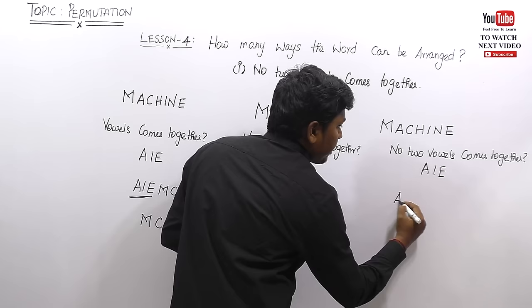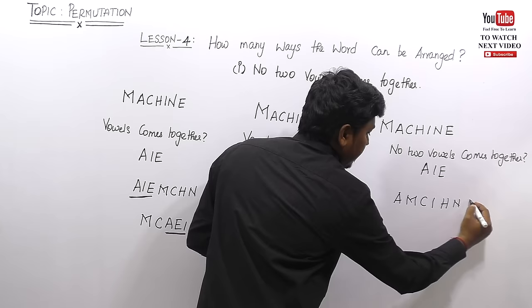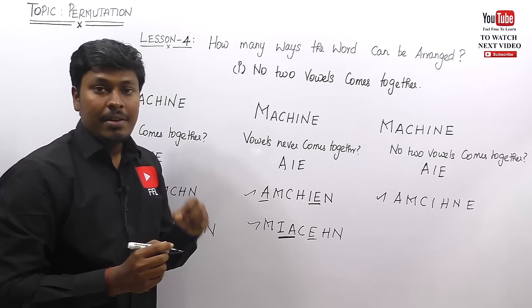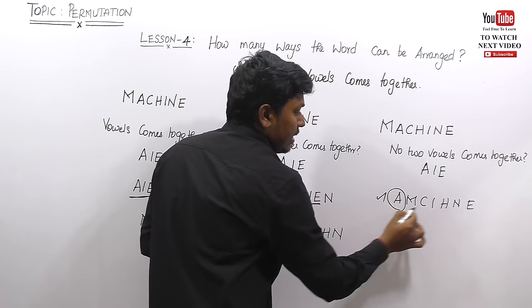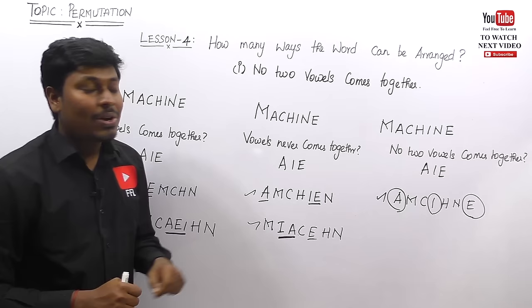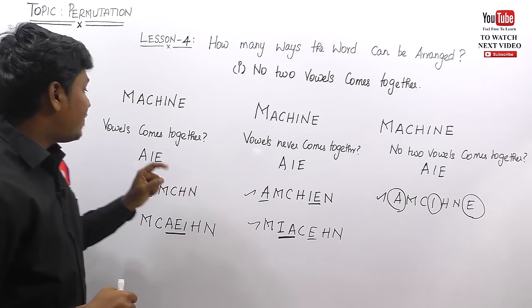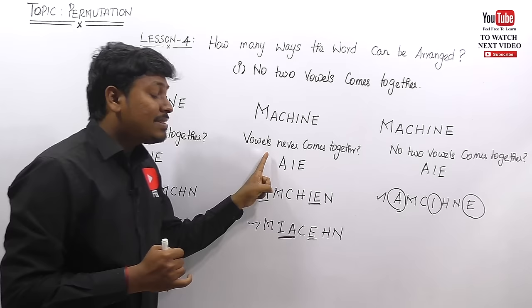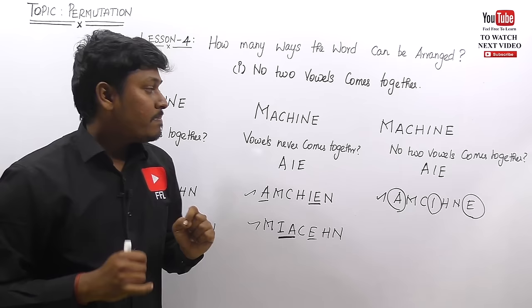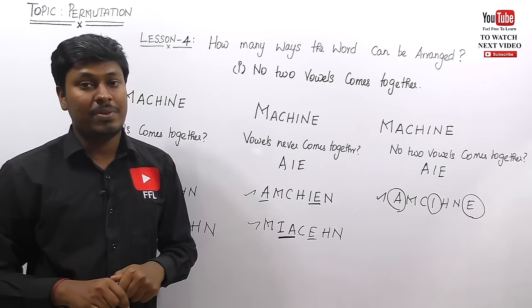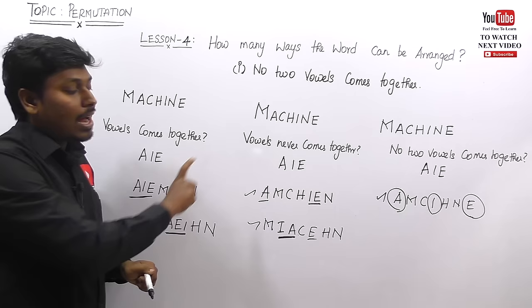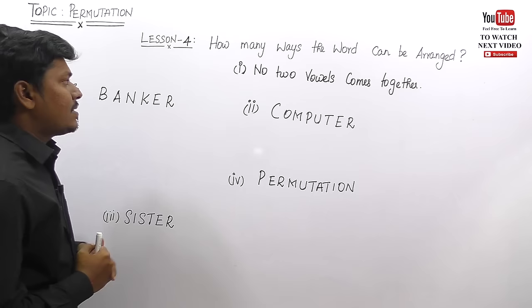For 'no two vowels come together,' consider A-M-C-I-H-N-E. Here A, I, and E are all separated from each other — no two vowels are adjacent. This is the concept of 'no two vowels come together.' To summarize: 'vowels come together' means all vowels must be grouped; 'vowels never come together' means not all three can be grouped but two can; 'no two vowels come together' means all vowels must be separated.